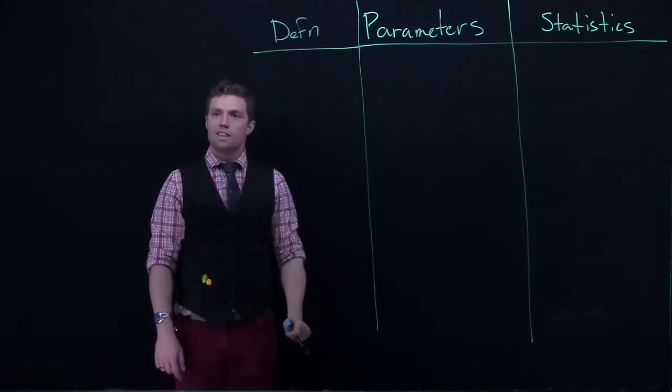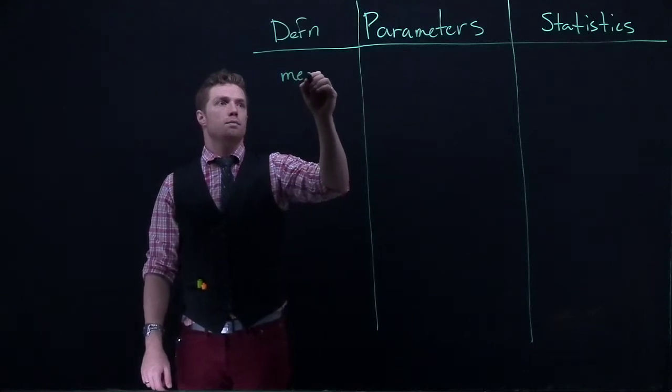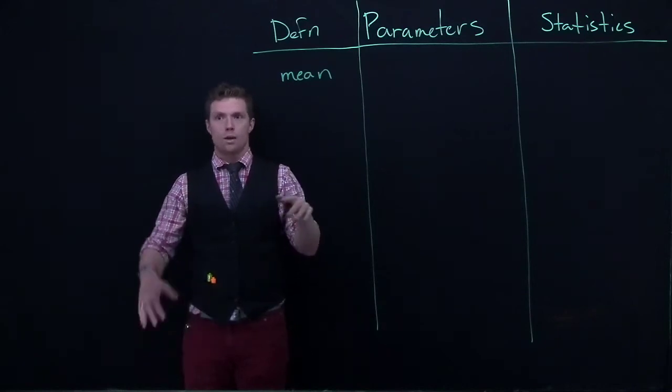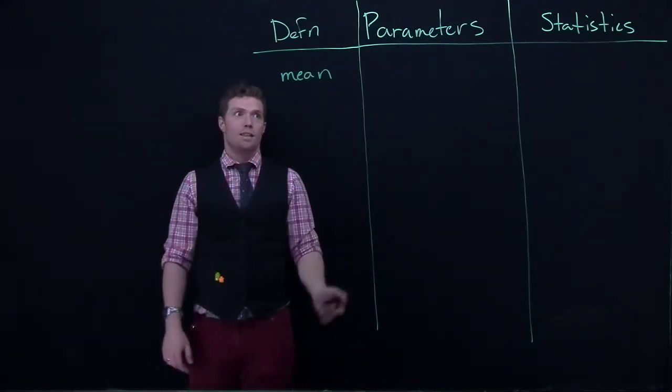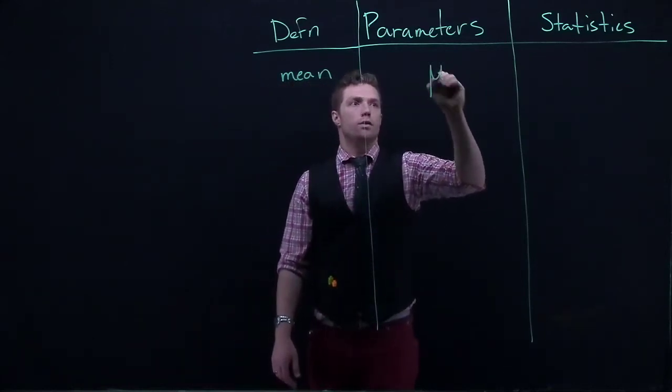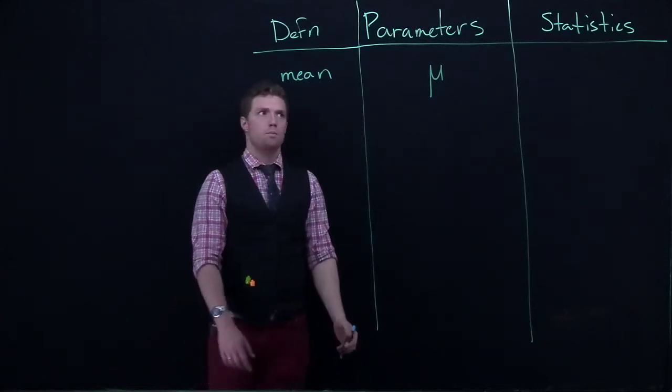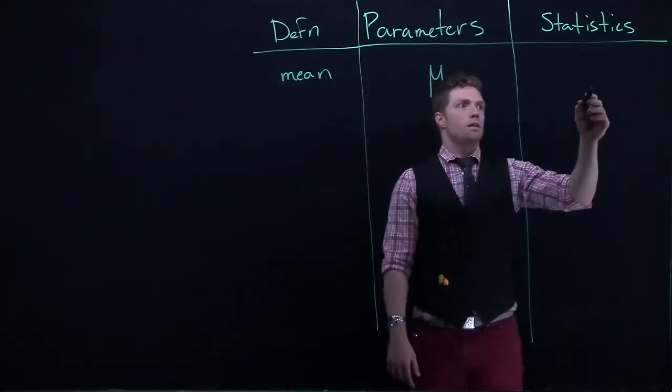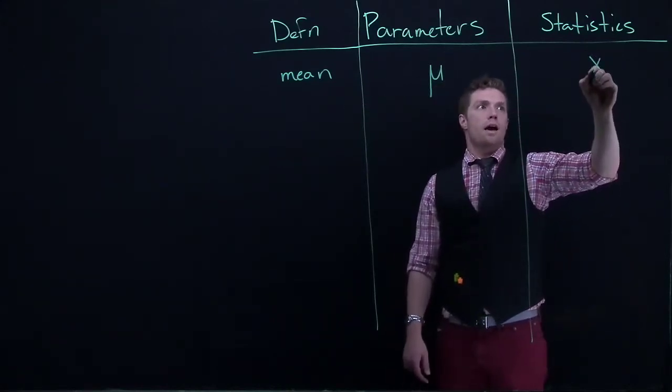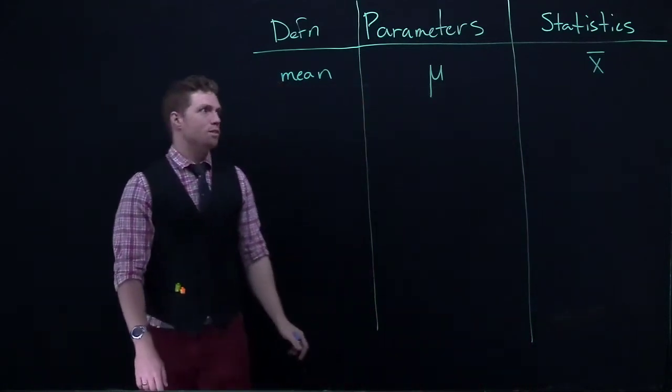Okay, so let's say that we are talking about the mean. Alright, so our parameters are going to be Greek letters. So it helps us if we see Greek, then we are talking about a parameter. So the mean is simply going to be the Greek letter mu. So if we see mu, that is talking about the population mean or the parameter. Okay, and the statistic, had we taken a sample and we found the mean, we would be looking at x bar. That's our symbolism for the mean.